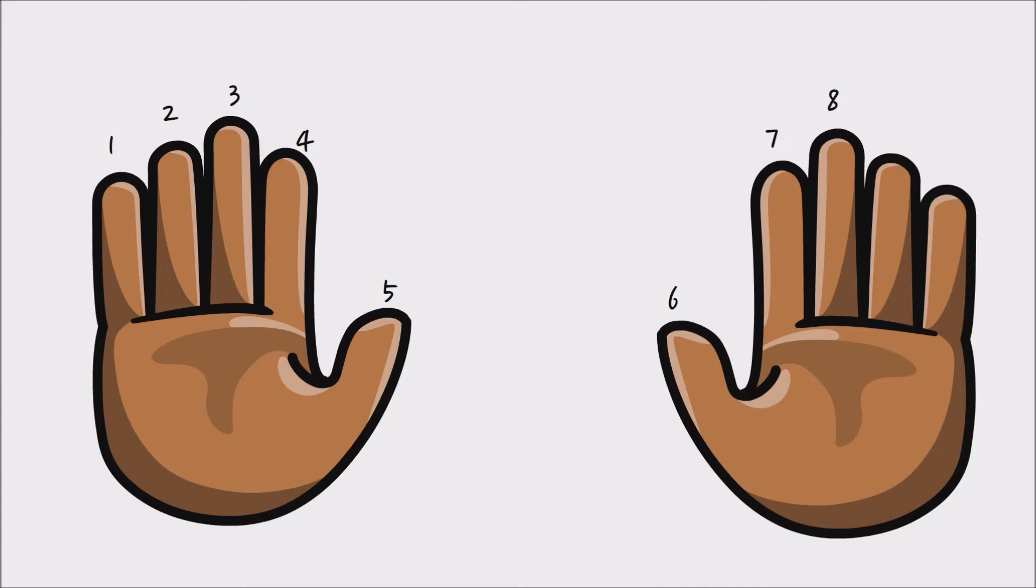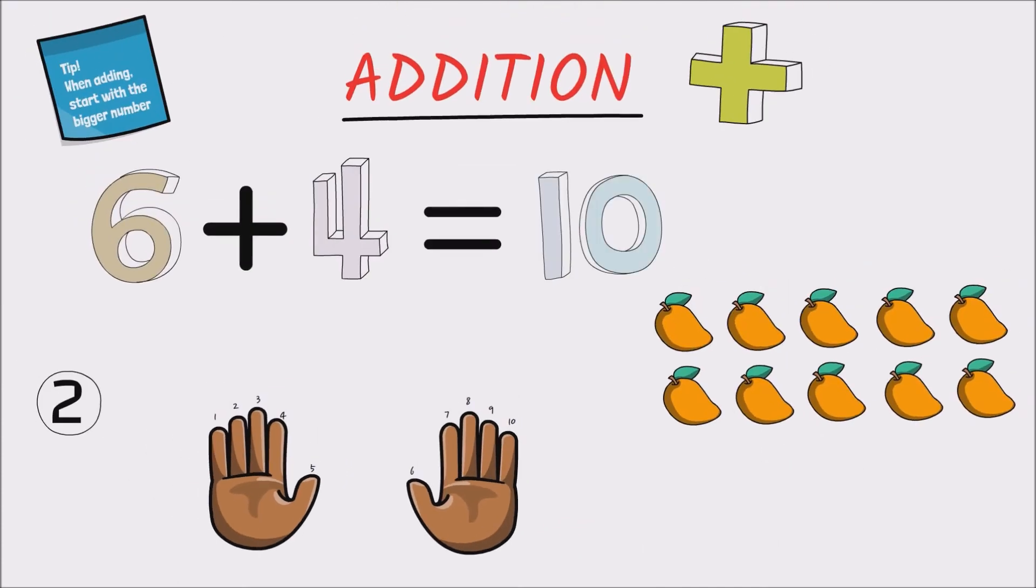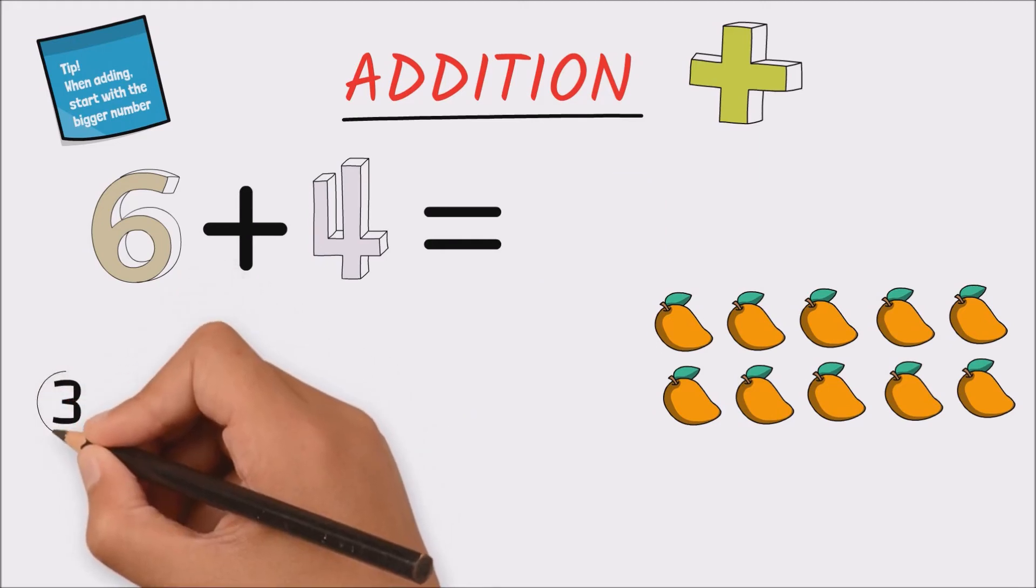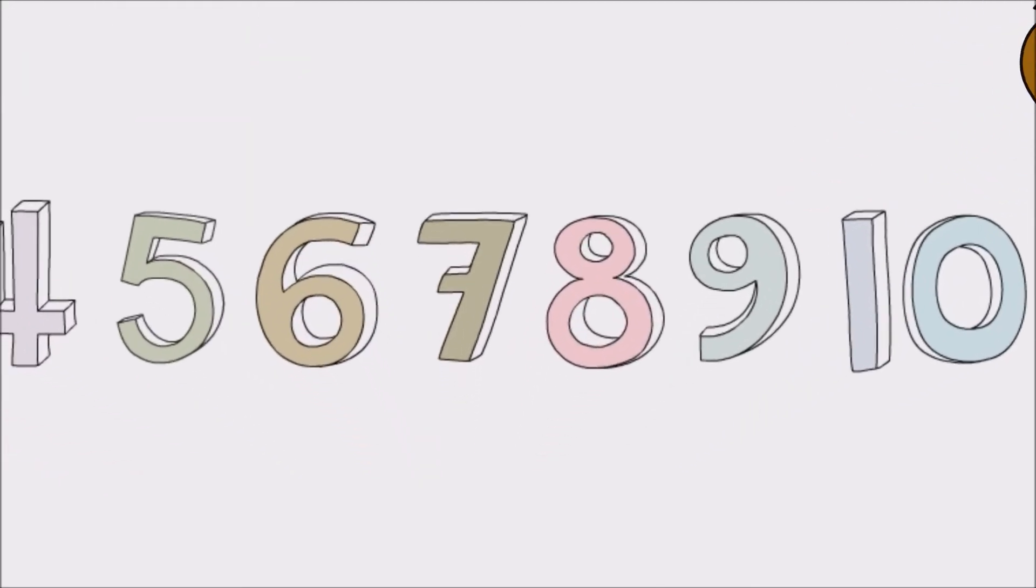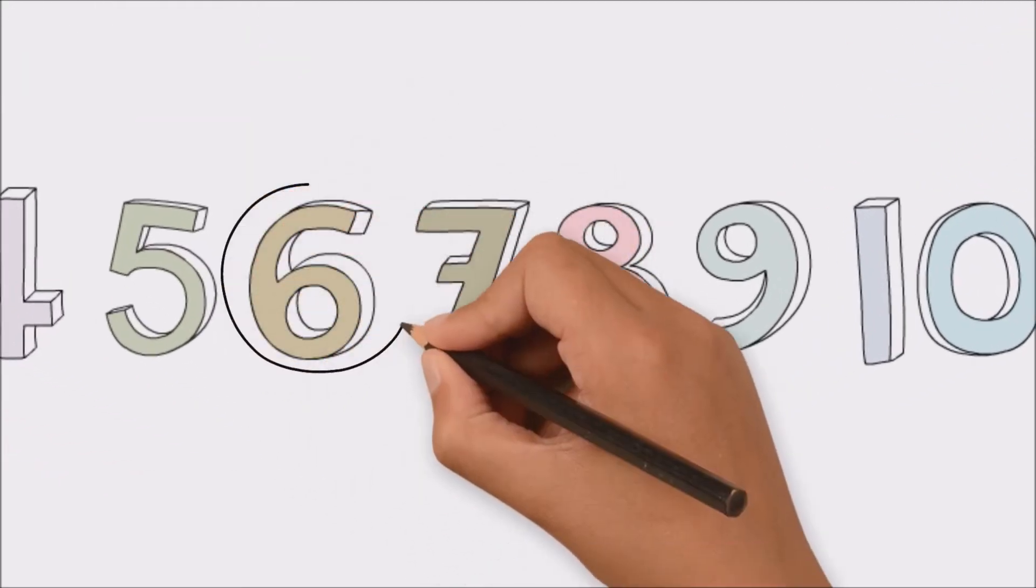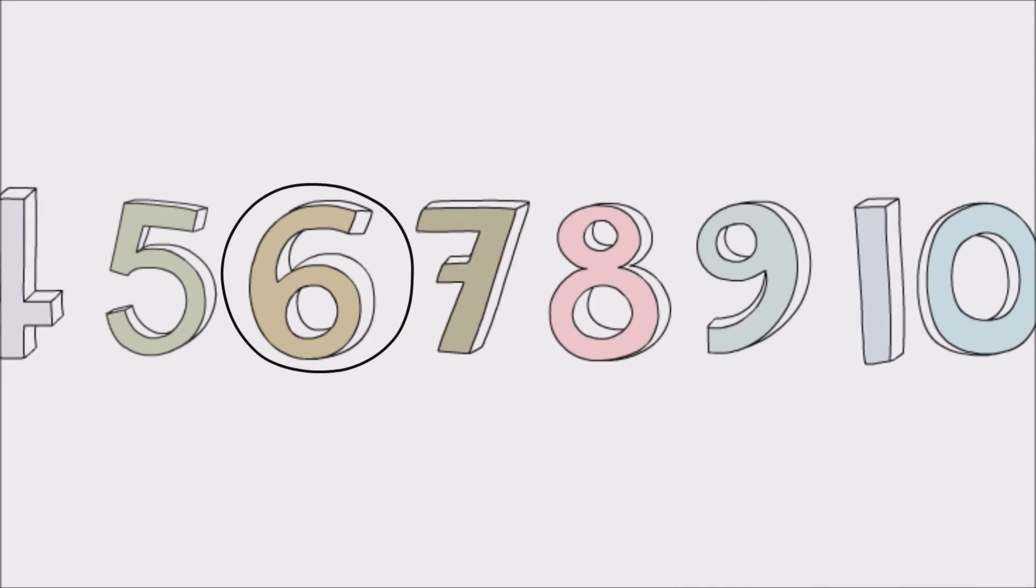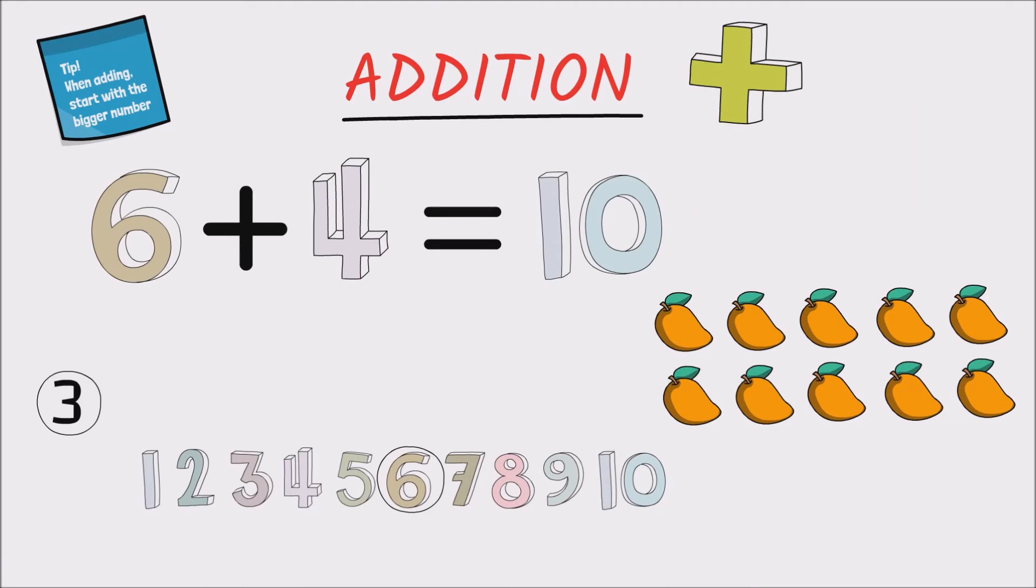Let's try a third method. Now this is without using fingers. We start by thinking of the bigger number six, and then in our minds we start counting towards ten but by four steps. So from six we would count seven, eight, nine, ten. So ten. Shanice has ten mangoes in total.